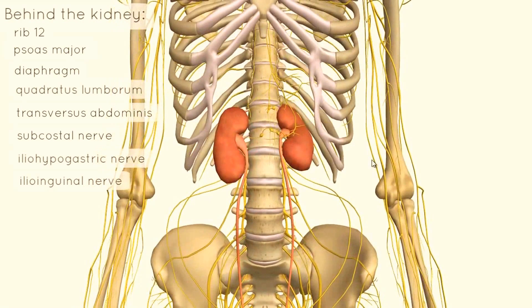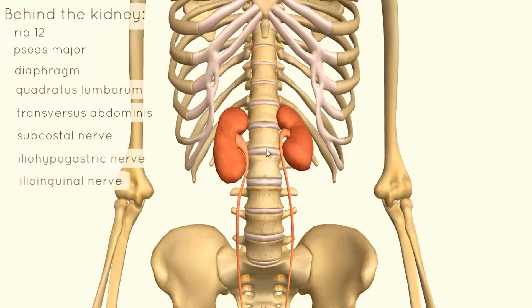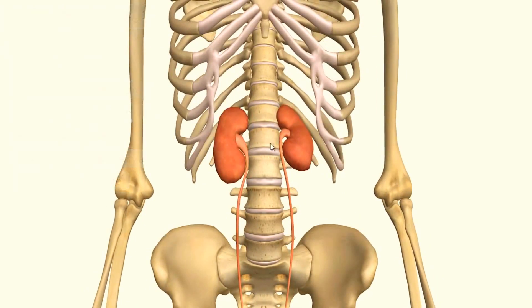What lies in front of the kidneys is different for the right and the left kidney. If you look at the kidneys from this view, you can see that the right kidney is slightly lower than the left kidney, and there's a reason for this.